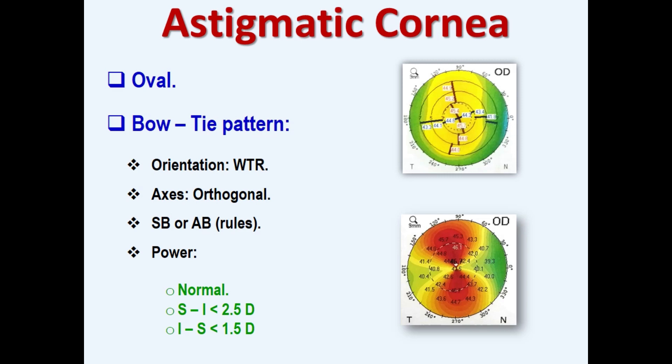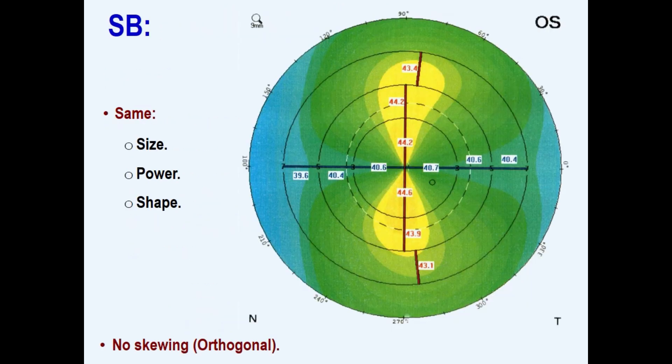Astigmatic cornea can be presented as oval pattern or bowtie pattern. Oval means minimal astigmatism. Bowtie pattern has significant astigmatism but within the normal limits. These bowties are either symmetric or slightly asymmetric.